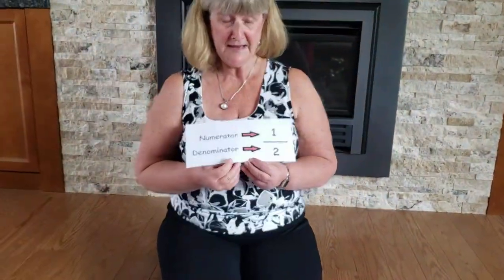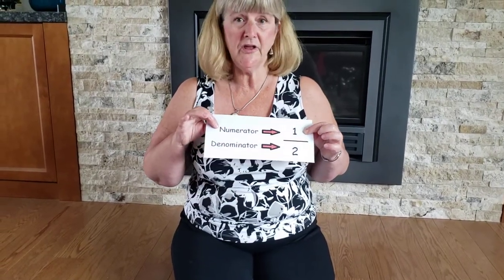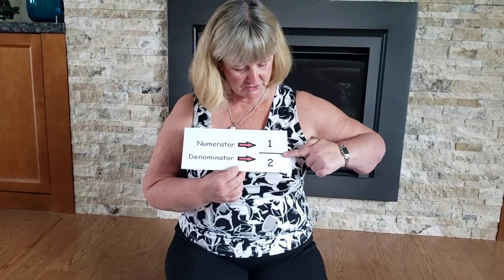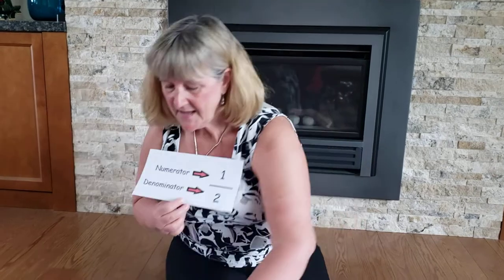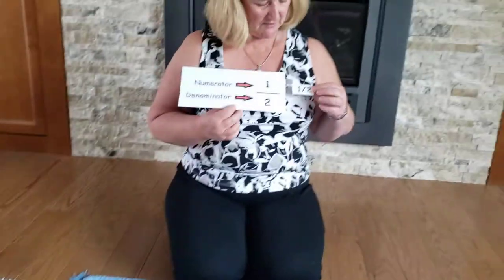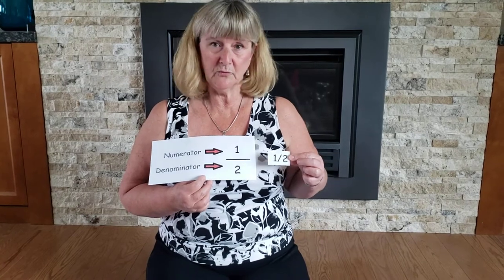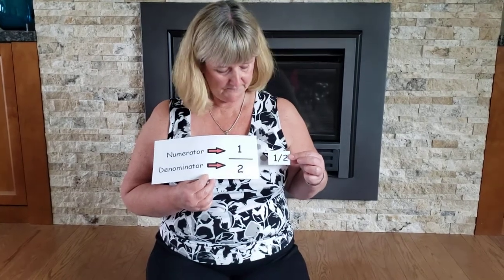The number parts have names. The top number is called the numerator. The bottom number is called the denominator. Sometimes you will see fractions written like this, with a line straight across, and sometimes you'll see fractions written like this, with a slanted line. They are exactly the same thing.